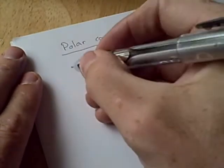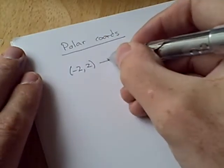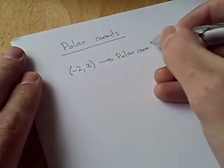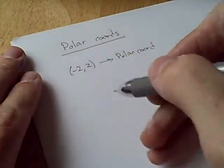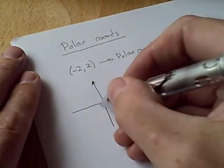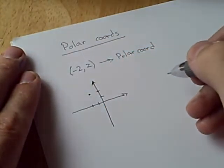Okay, this first part we'll take a point in rectangular coordinates and put it into polar coordinates. It helps to graph the point, and you'll see why as we do this problem. So negative 2 puts us right there.